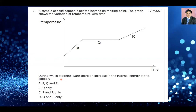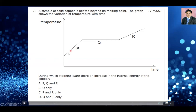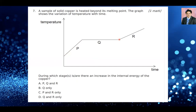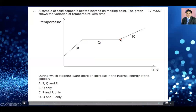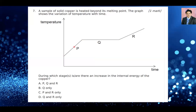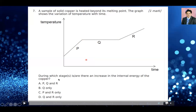Internal energy equals potential energy plus kinetic energy. At stage P, the kinetic energy is increasing because the temperature is increasing. At stage Q, the temperature is not increasing so kinetic energy is not increasing, but potential energy is increasing because the distance between the bonds is increasing. At stage R, the kinetic energy is increasing again. Since internal energy is the sum of potential and kinetic energy, internal energy is increasing across P, Q, and R. So your answer is A.